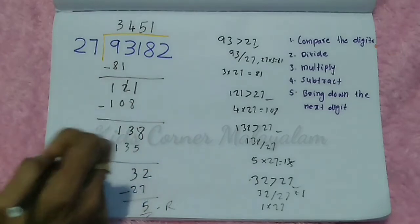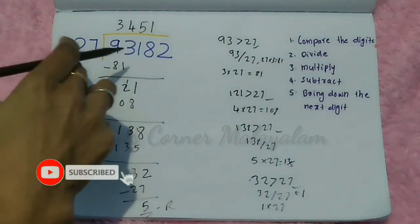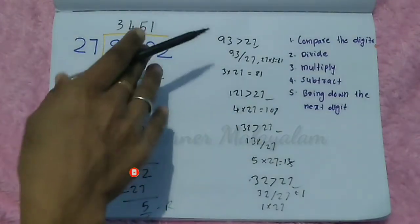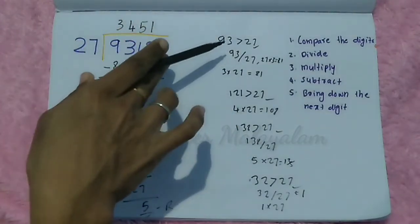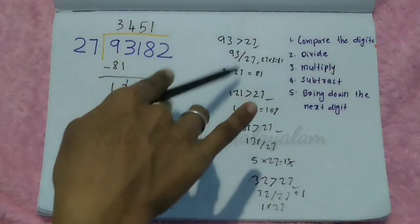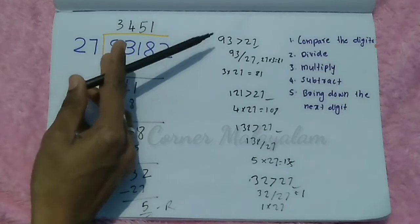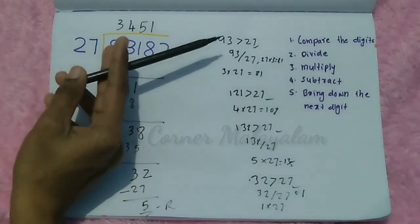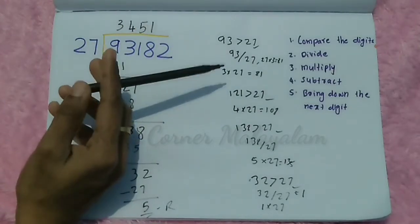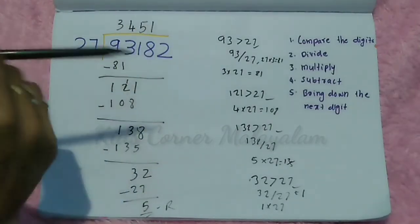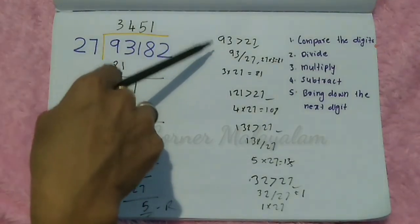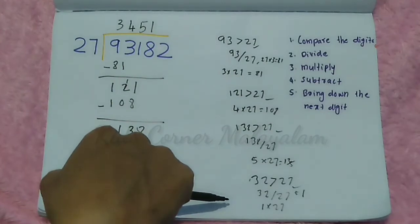Now we have completed the 5-digit divided by 2-digit long division. Practice this same method with other problems. When you do it step by step, you will automatically be able to do it at your own speed.